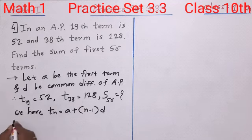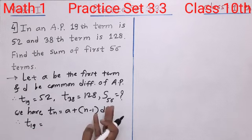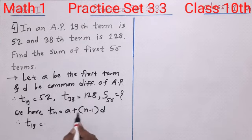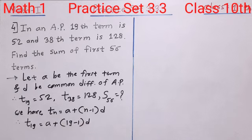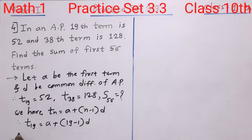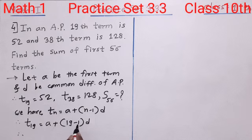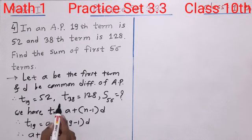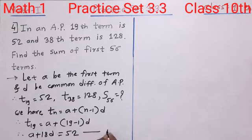For T19, we substitute N = 19 in the formula: T19 = A plus (19 minus 1) into D, which gives A plus 18D. There are no specific values of A and D, so we write them as is. Interchanging sides, we get A plus 18D equals 52. In this way we get the first equation.